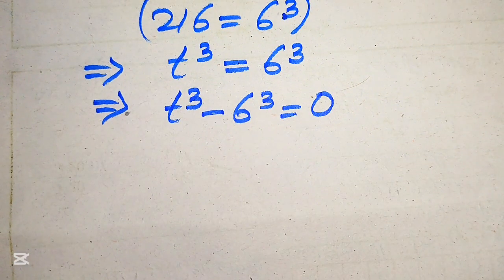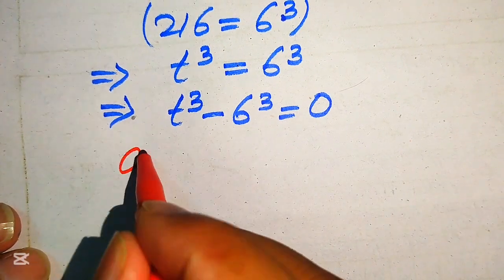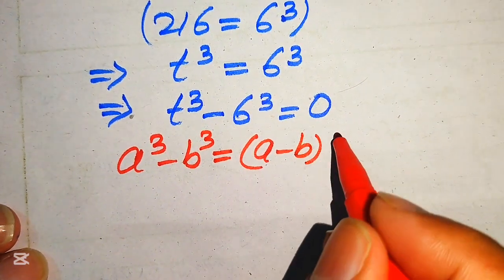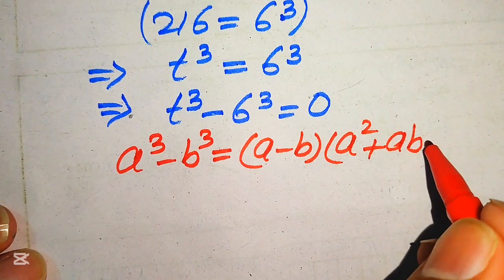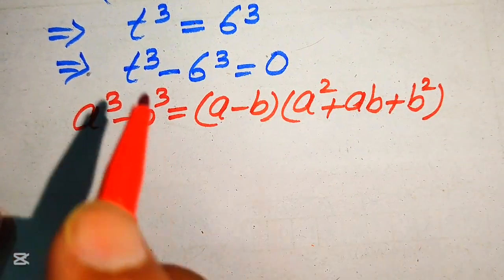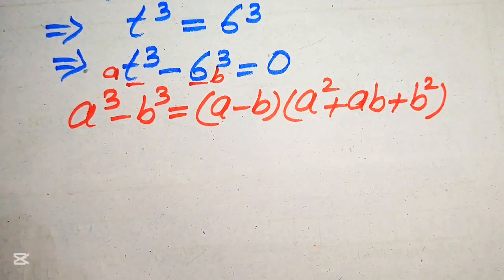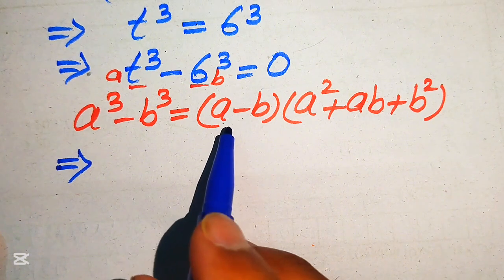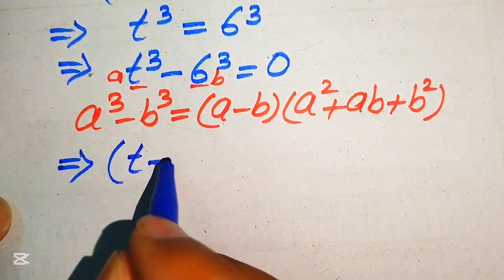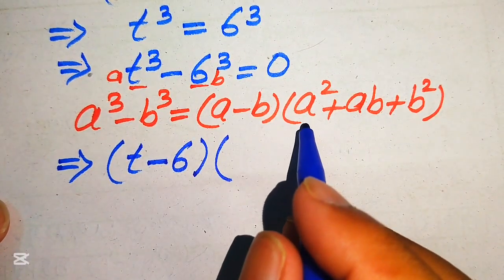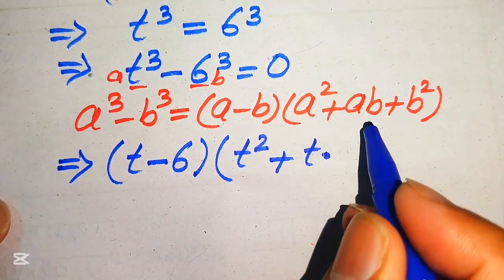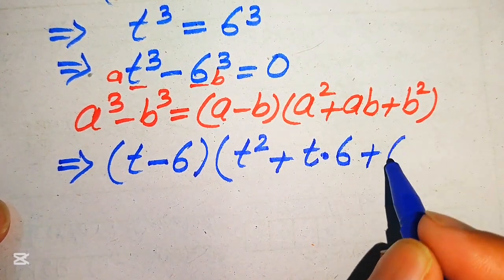In the next step, we apply the difference of cubes formula. We state the formula as: a cubed minus b cubed equals (a minus b) times (a squared plus ab plus b squared). Here the value of a is t and the value of b is 6. Substituting these values into the formula, we begin with (a minus b), which gives us (t minus 6), multiplied by (t squared plus ab...